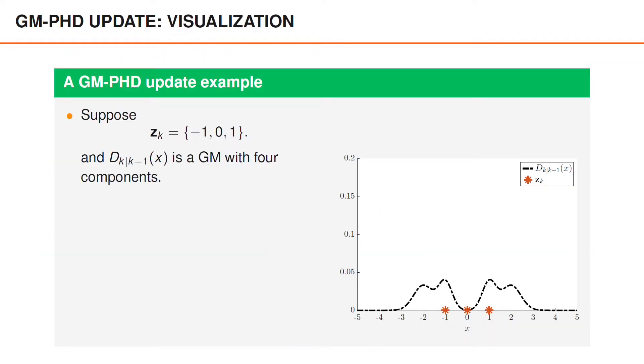Let us visualize the update step in an example which is a continuation of the toy example that we used to visualize the prediction step. This means that the predicted psd is a Gaussian mixture with four components. As illustrated in the figure, we assume that we observe the measurements minus 1, 0 and 1 at time k.